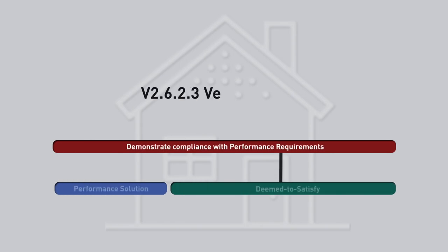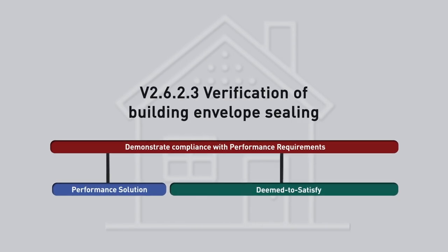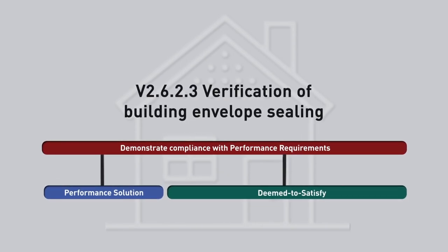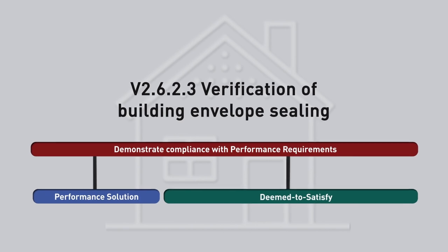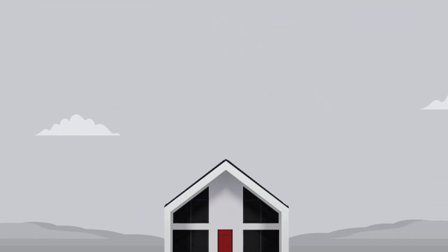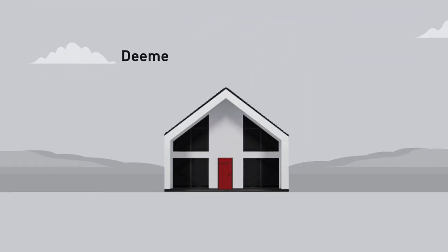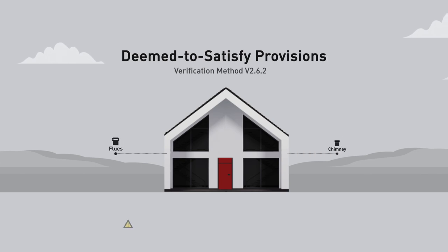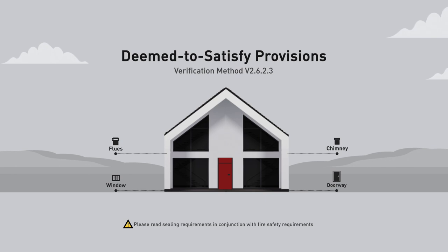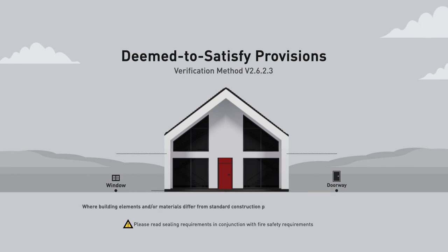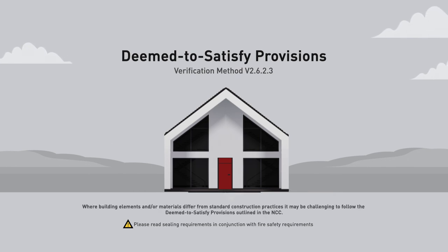There are two pathways for demonstrating that the building envelope is sealed adequately and meets the NCC performance requirement. One is to follow the prescriptive deemed to satisfy provisions in the NCC. But if that's considered too rigid or not appropriate for a particular building design, a performance solution can be used to demonstrate compliance.